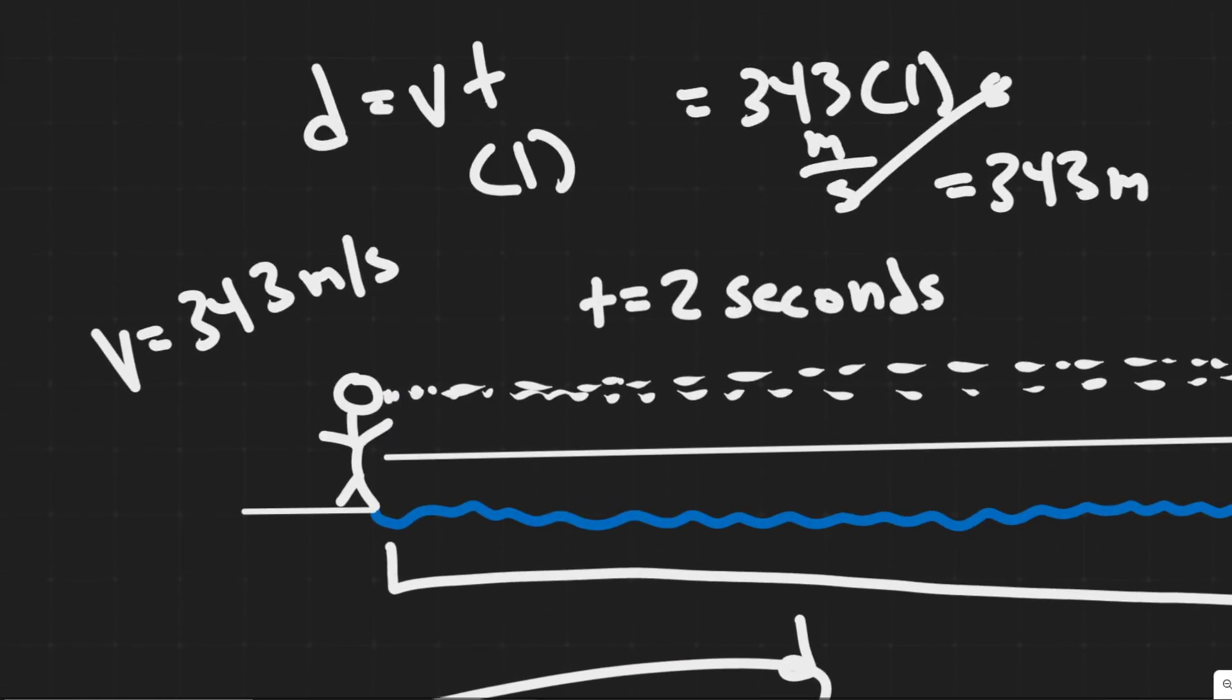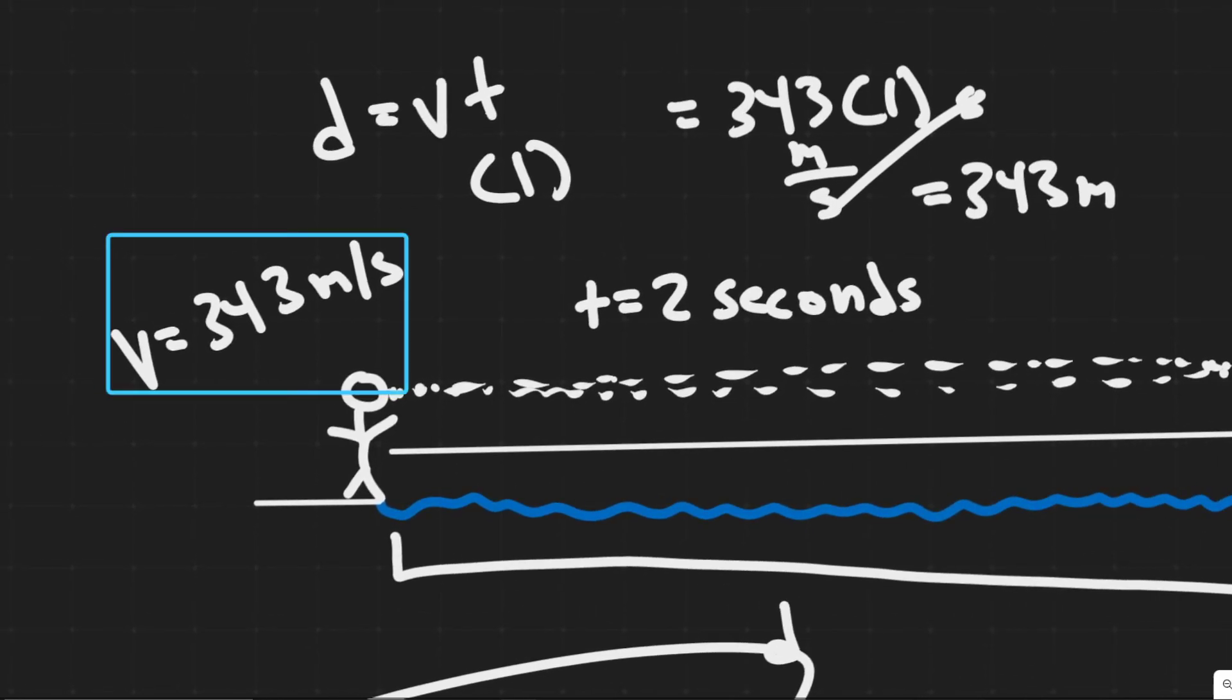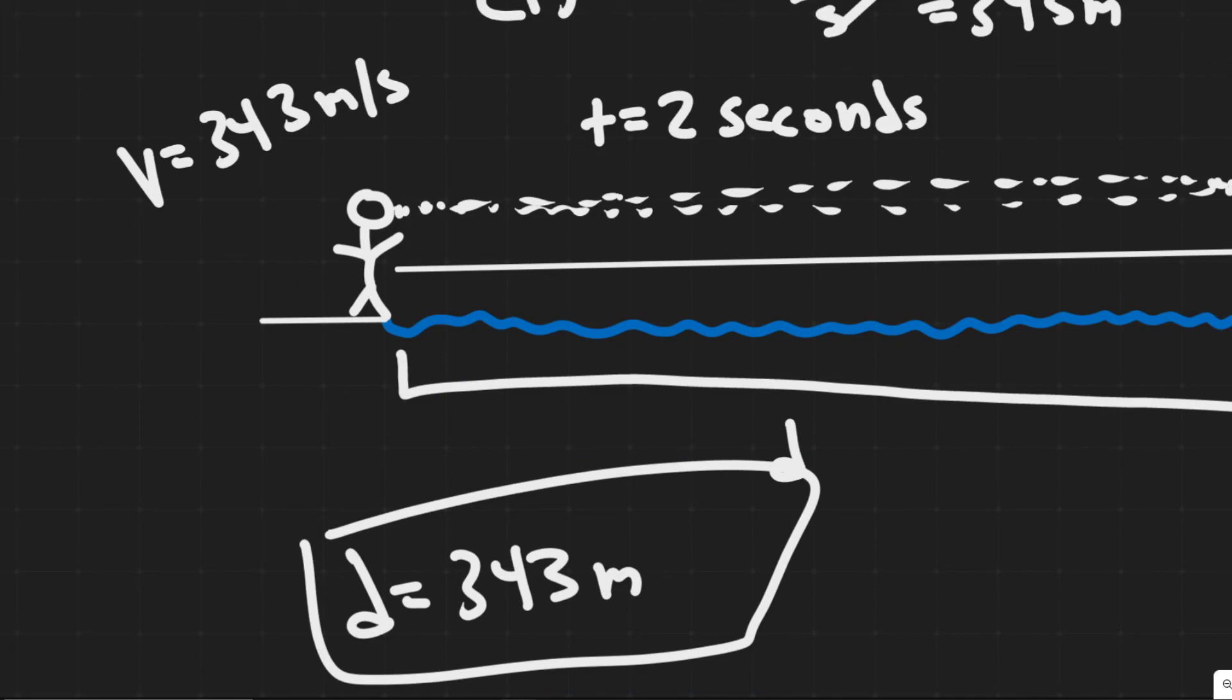And then just quick rundown. So all we did was use d equals vt. And then we had to figure out how long it took to travel across the lake. And then we just need to know the speed of sound. So this is going to be your answer, and hopefully you found this useful.